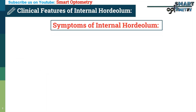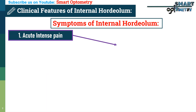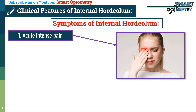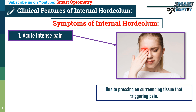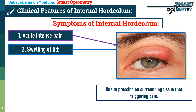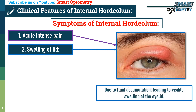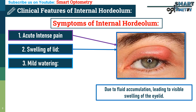Symptoms of internal hordeolum. 1. Acute intense pain, due to pressing on surrounding tissue that triggers pain. 2. Swelling of the lid, due to fluid accumulation, leading to visible swelling of the eyelid.